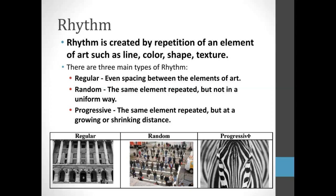There are three types of rhythm that you can use. The first one is called regular. In this one we're probably looking at a scene straight on, not from the side but straight on, and it's going to create equal spacing of those elements of art. So in this picture example we have equal spacing of the columns and the doors and the lights, but if we were to take this picture from an angle, from the side, we'd be creating a different type of rhythm.